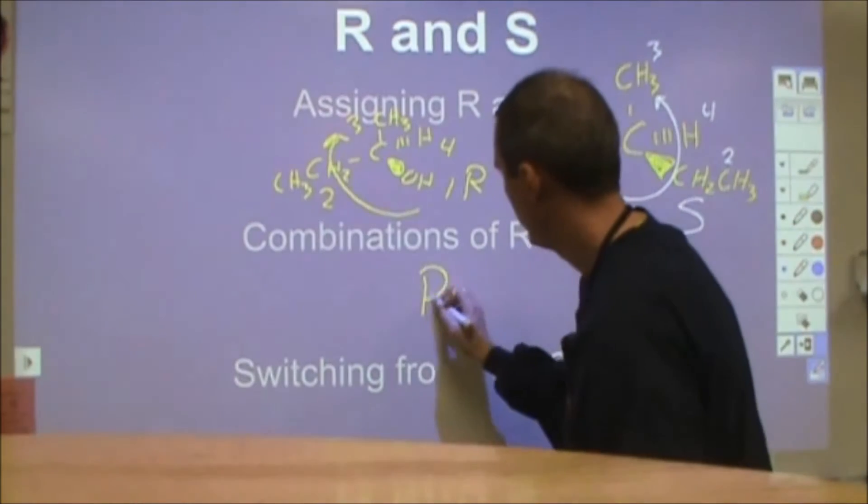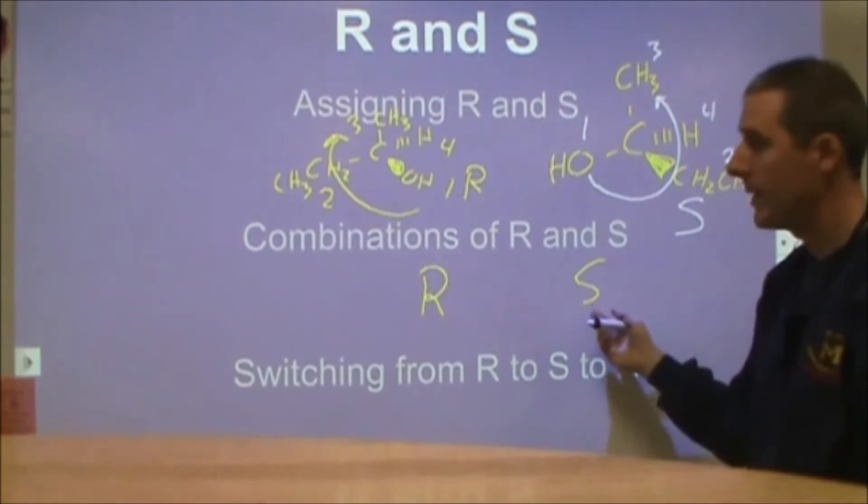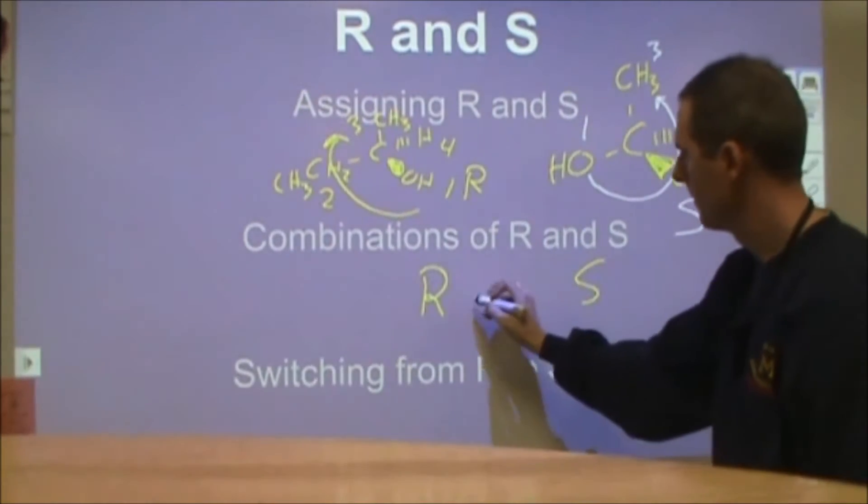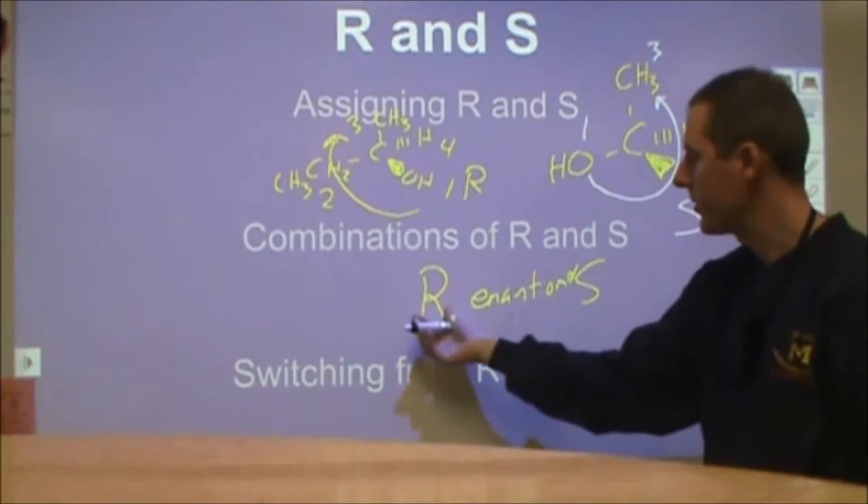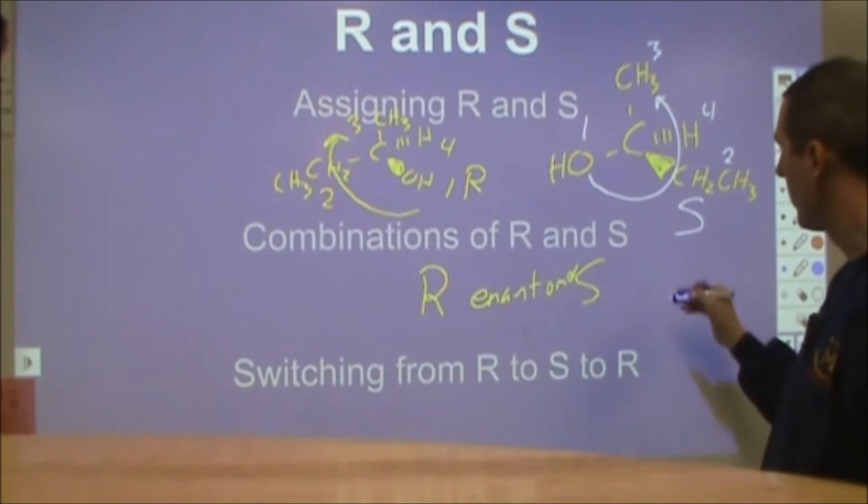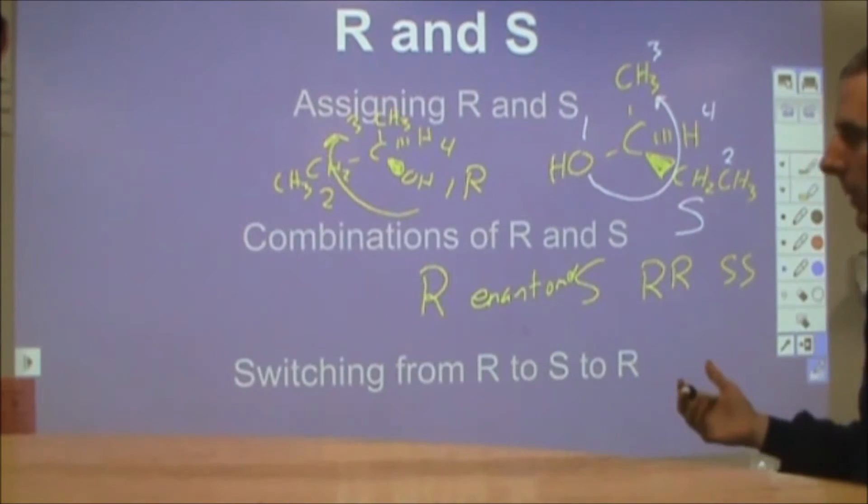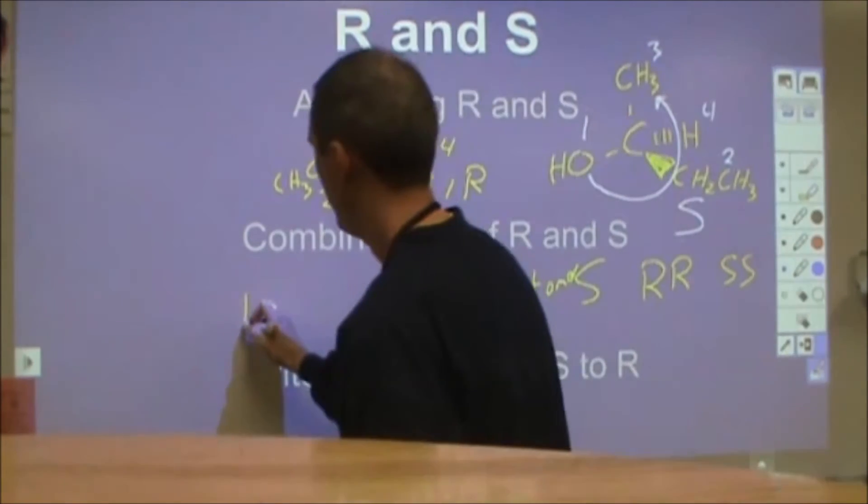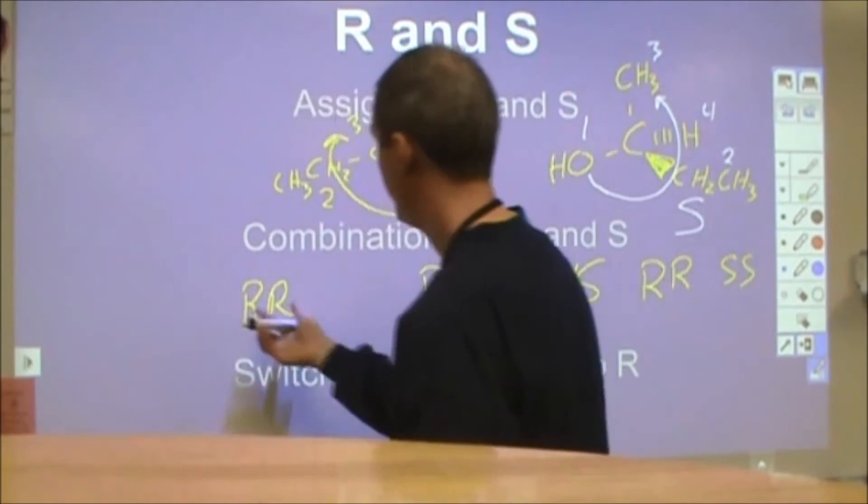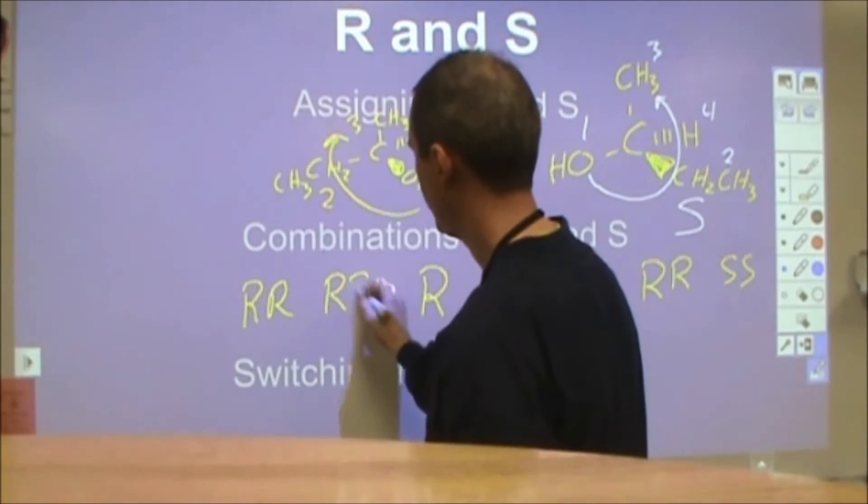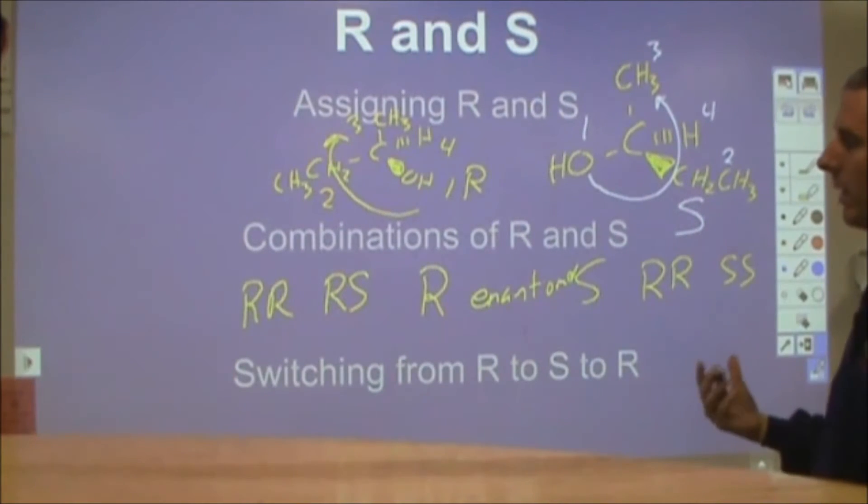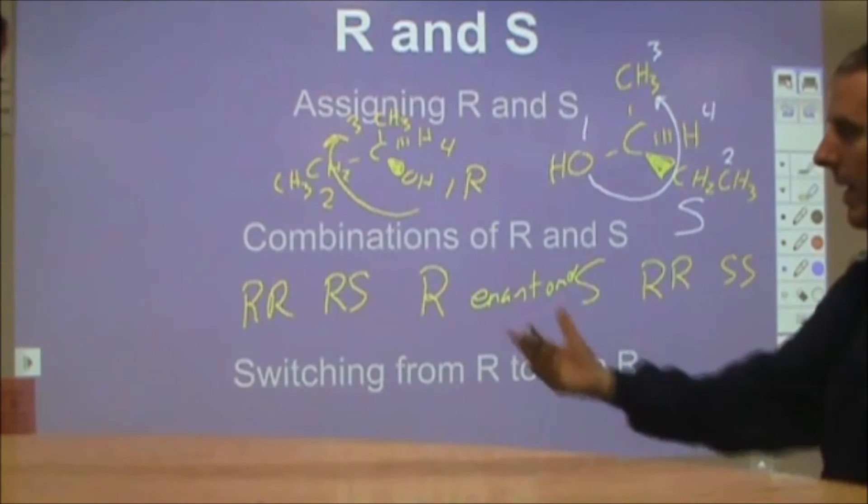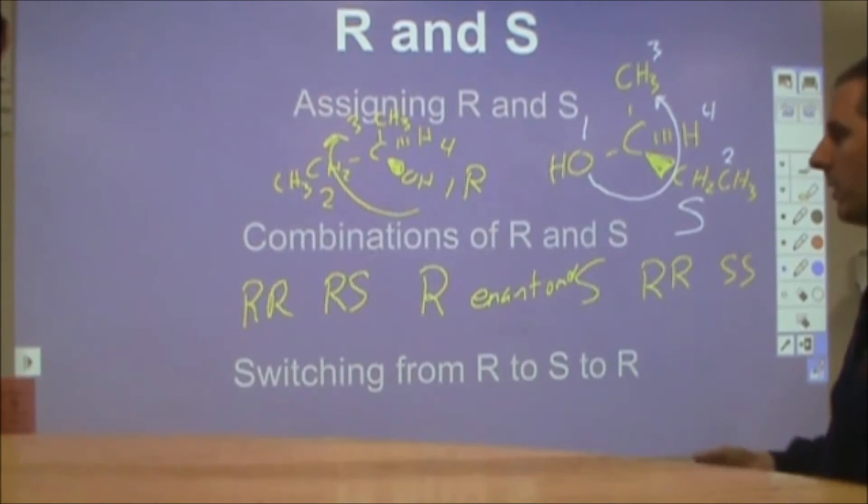Now if you have an R configuration, then S is the enantiomer. So if you have a chiral stereocenter that's assigned R, then the S configuration would be the enantiomer. If you have RR, then SS will be your enantiomer. However, if you have RR where you have two of these stereocenters and then you have another one that's RS, those will be diastereomers. Those will not be mirror images and therefore they'll be stereoisomers that are not mirror images and therefore they'll be diastereomers.